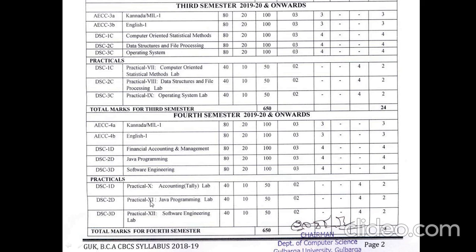For practicals in the fourth semester: Practical Paper 10 is Accounting Lab on Tally (50 marks, 40 external, 10 internal), Practical Paper 11 is Java Programming Lab (50 marks, 40 external, 10 internal), and Practical Paper 12 is Software Engineering Lab (50 marks, 40 external, 10 internal). Total fourth semester marks are 650 and 24 credits.